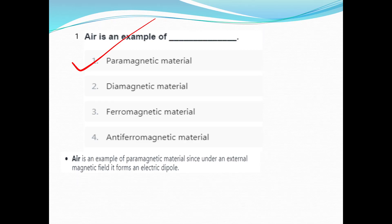Important questions. First question — here is an example. What is paramagnetic? What is diamagnetic? What is ferromagnetic? What is anti-ferromagnetic?